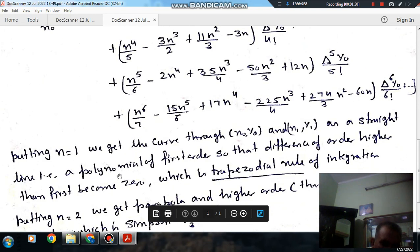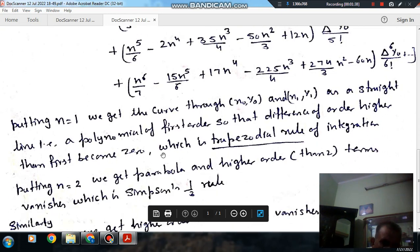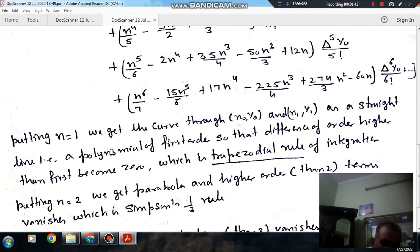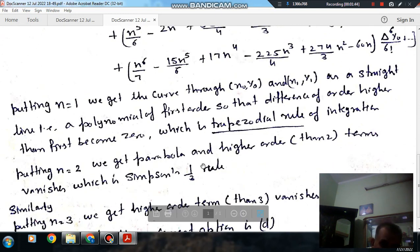So the polynomial will be of first order and the formula is trapezoidal rule of integration. Now if you put n equals 2, then the term having order higher than 2 will vanish and it will form Simpson's 1/3.